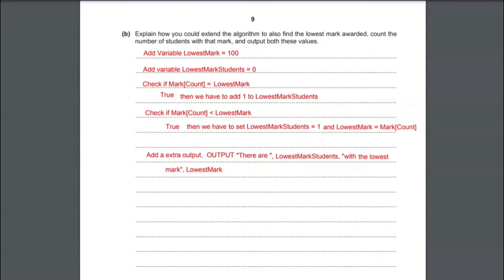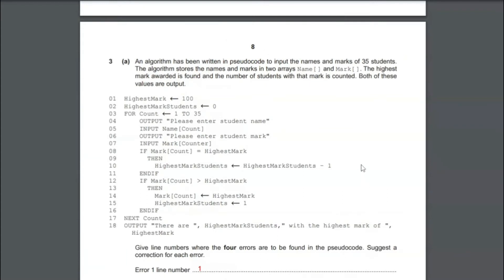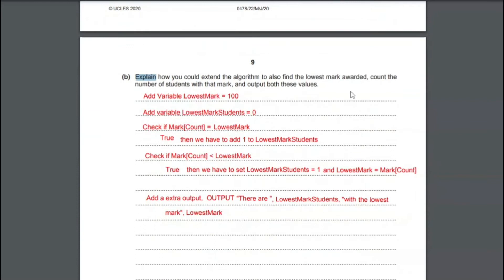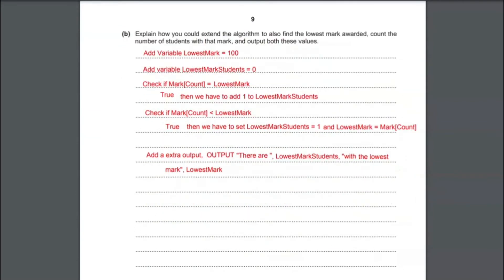Coming to part B of question 3. We have to explain how to extend the algorithm to also find the lowest mark, count the number of students with that mark, and output these values. They have asked us only to explain, not write the whole algorithm. First we have to add a variable called lowest mark and set it to a high number — since exams are usually out of 100, set it to 100, or any higher value like 1000 or 2000.